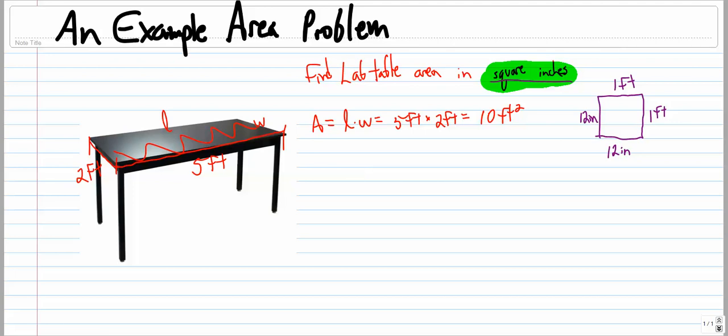So if we look at it using feet, the area is 1 foot by 1 foot, so this area is 1 foot squared. Or if we look at it using inches, that equals 12 inches by 12 inches, that's 144 inches squared.